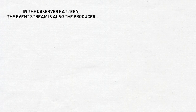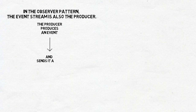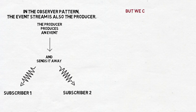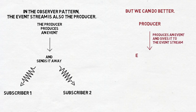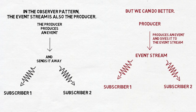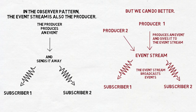But where do the events come from? In the original observer pattern, we assume the event stream is also the producer of events. But producing data and sending are two operations, and we can decouple them. So the producer becomes whatever part of the app that can produce the data and give it to the event stream. And the event stream becomes the object responsible for handling subscribers and broadcasting events to them. Since the producer is now separate from the event stream, nothing is preventing us from having more than one producer. The connection becomes many-to-many, with the event stream sitting in the middle. This way, producers and subscribers don't have to know about each other — they only have to know about the event stream.